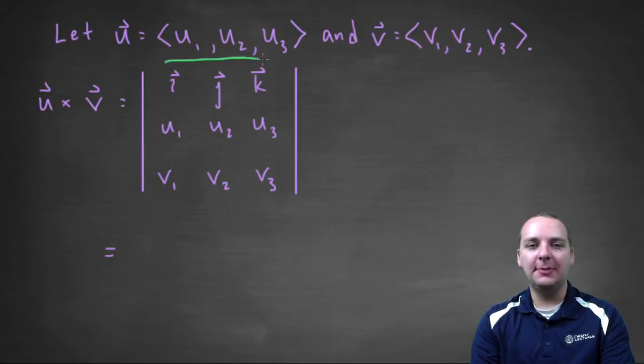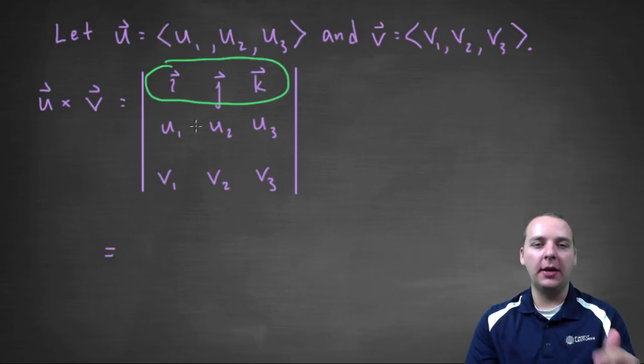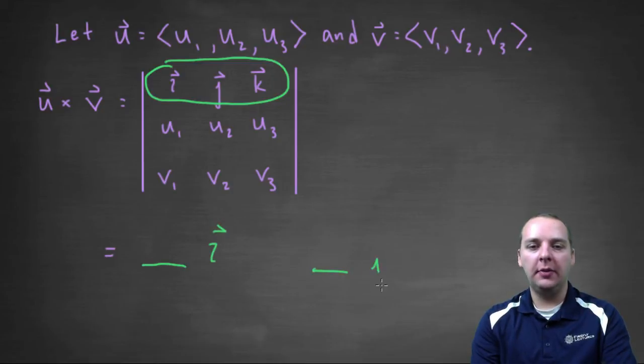So for consistency's sake, I want you to always expand along the top row. Remember expansion by minors. So we're going to expand along this top row and we're going to have three parts to the determinant. We'll have a part with i, we'll have a part with j, and we'll have part of the determinant from k.